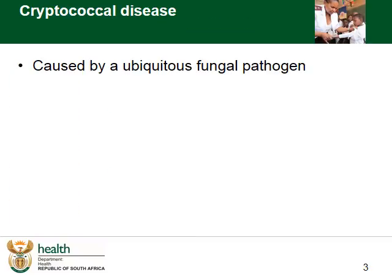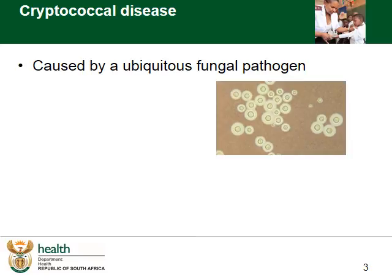Cryptococcus is a ubiquitous fungal pathogen found in soil and the environment all around us. 80% of us have already been exposed to it by the age of two, with detectable antibodies in the blood. This is a latent infection, similar to latent TB.